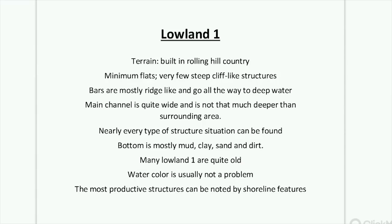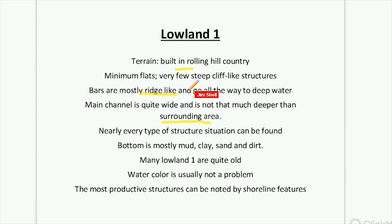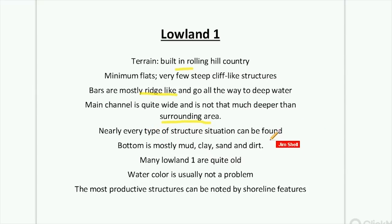Now let's go into Lowland. These were quite interesting to research. A Lowland 1 is built in rolling hill country. You have a minimum amount of flats and very few steep-like structures. Bars are mostly ridge-like and go all the way to deep water. The main channel is quite wide and not that much deeper than the surrounding area. Nearly every type of structure can be found in a Lowland 1. The bottom is mostly mud, clay, sand, and dirt.